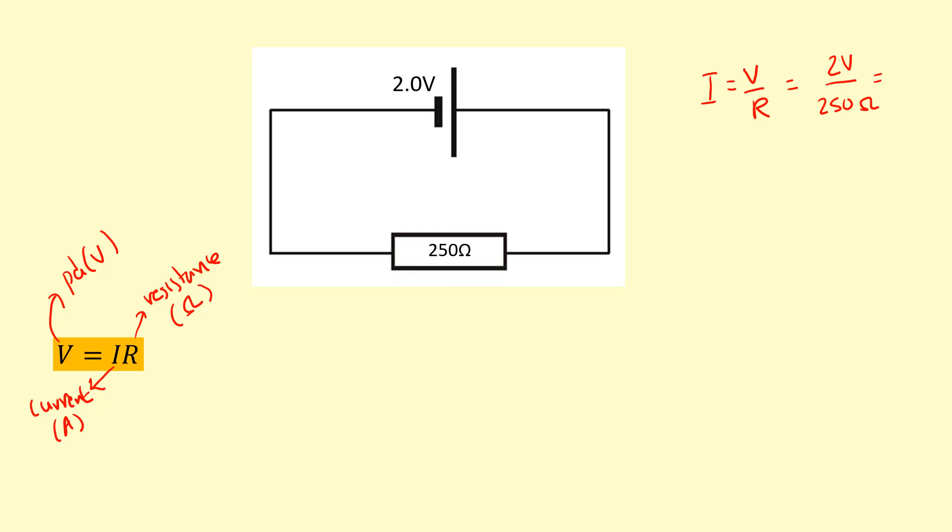And that gives me 8 times 10 to the minus 3 amps, which is 8 milliamps, which will flow through this circuit. 8 milliamps.